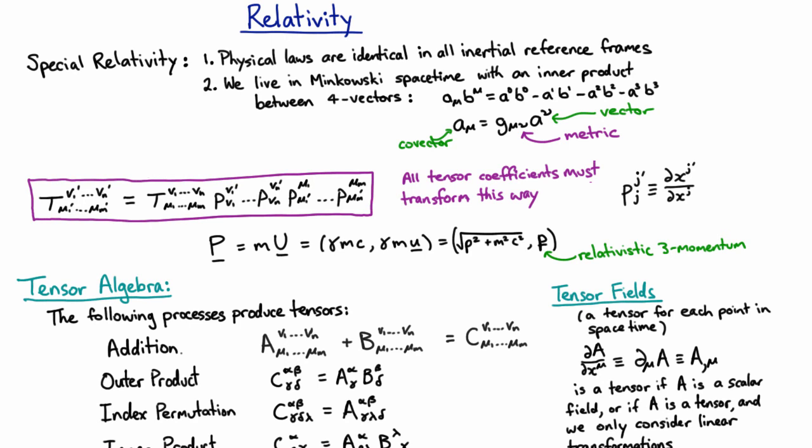So we've learned the principles underlying special relativity. We learned that physical laws are identical in all inertial reference frames and that one of those physical laws is that the speed of light is constant.